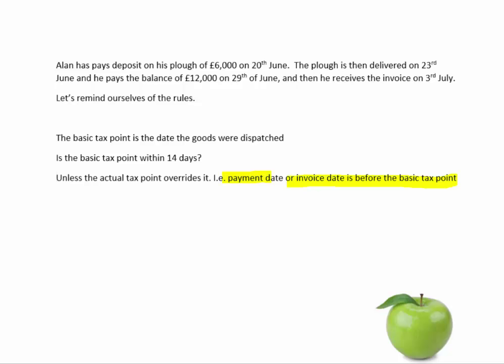So here, the basic tax point is the 23rd of June — that is when the plough was delivered. However, Alan did actually pay a deposit on his plough on the 20th of June, which is before the basic tax point. So as you've got two payments, there are going to be two tax points.